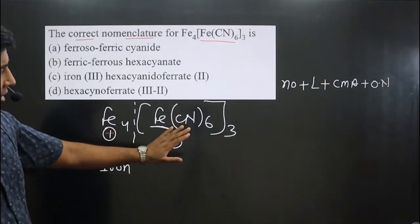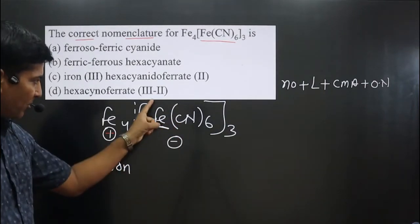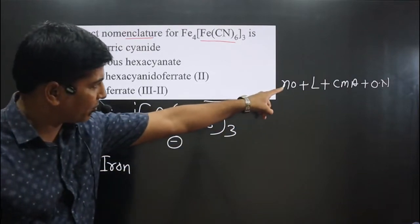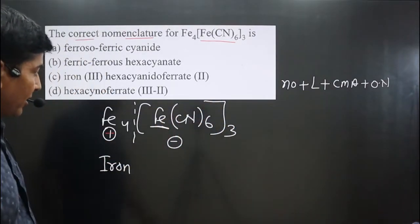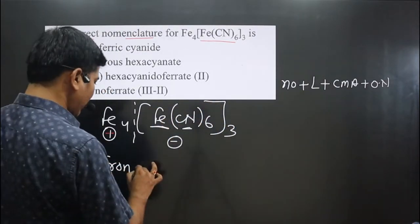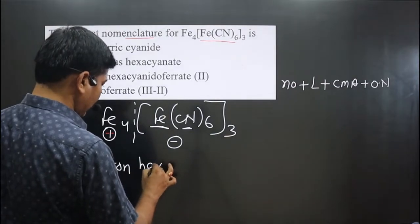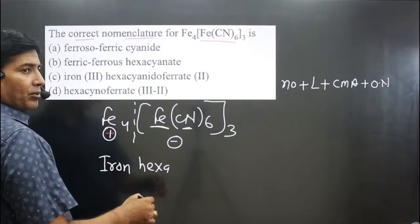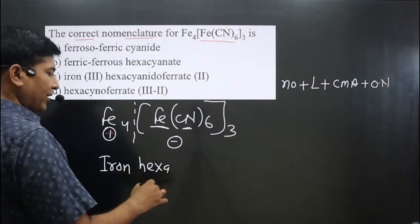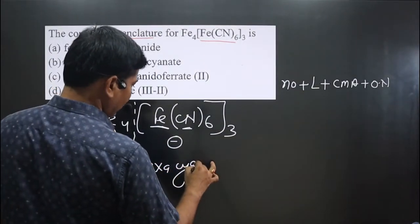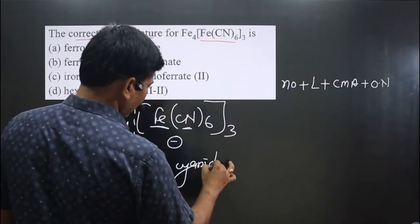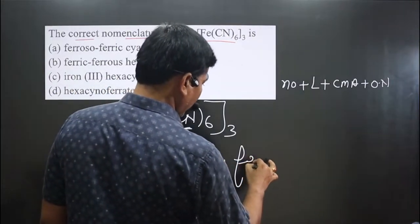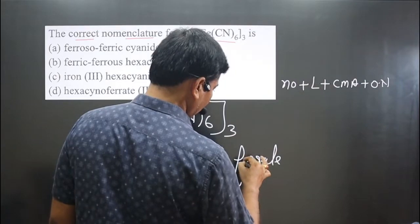We start naming the anionic part, which is the complex part inside the brackets. First, the number of ligands — there are six, so we write 'hexa'. Then the type of ligand — this is cyanide ion, so we write 'cyanido'. Then for the central element, we use the special name 'ferrate'.